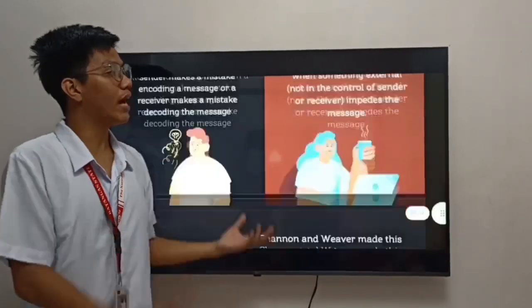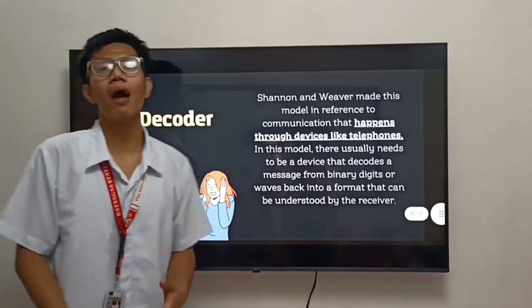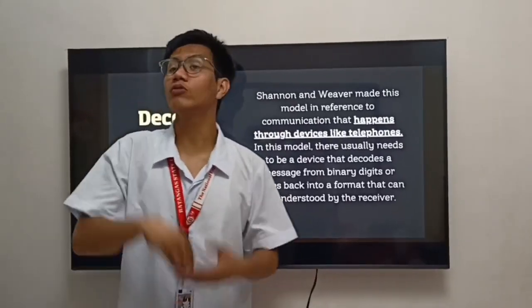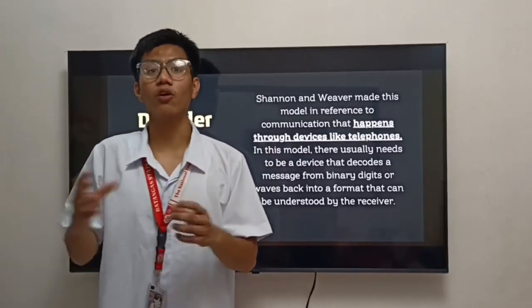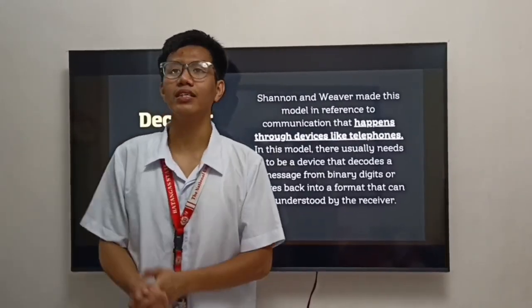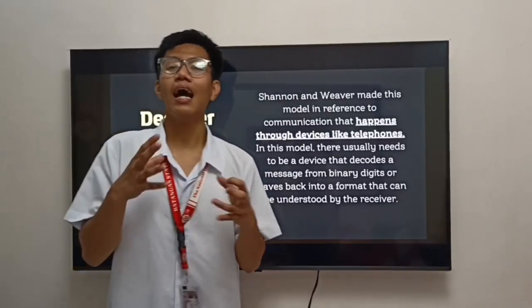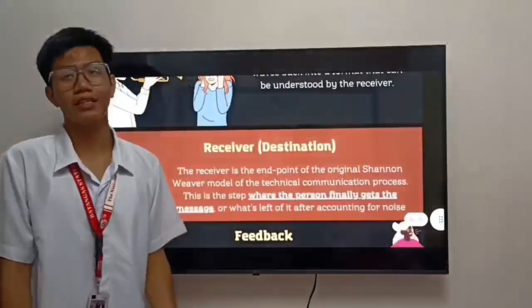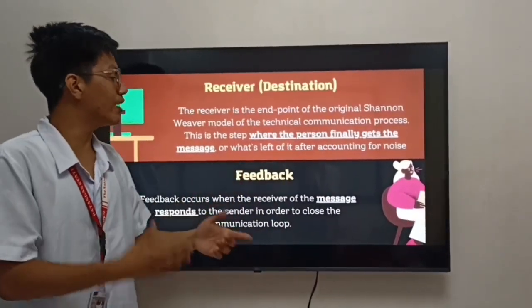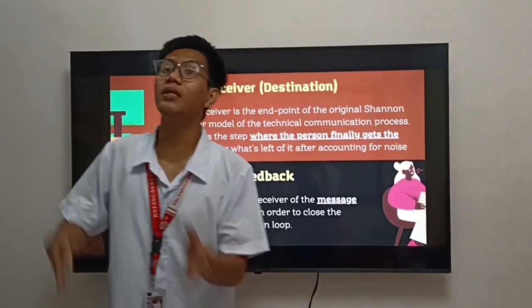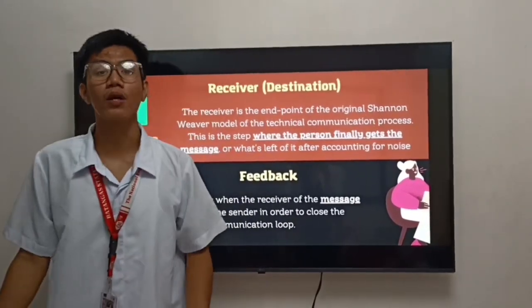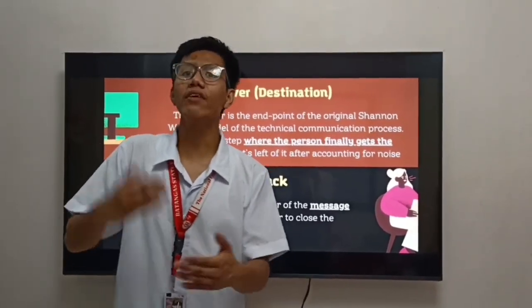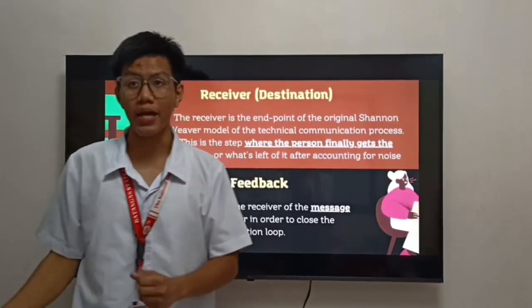Now let's proceed to the decoder. The decoder works through devices like telephones. An example is when a telephone turns signals such as digital or wave data back into sounds, and another example is when a cell phone turns data into readable and listenable messages. Now for the receiver — the receiver is where the person finally gets the message. The receiver might be a person or the end of a telephone line. The receiver element also applies when we write an email or reply to an email.